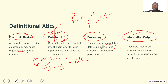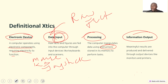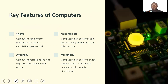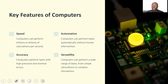A computer is an electronic device with the ability of receiving data as input and then processing it according to a set of required instructions stored in its memory or database, to produce an output called information. Now let's look at some key features of computers. Number one is speed.